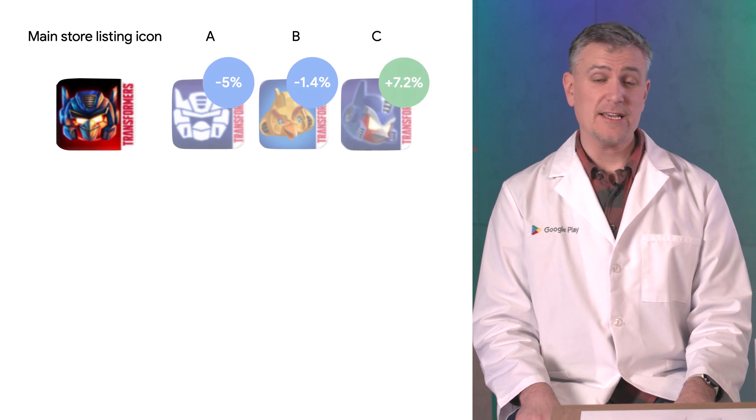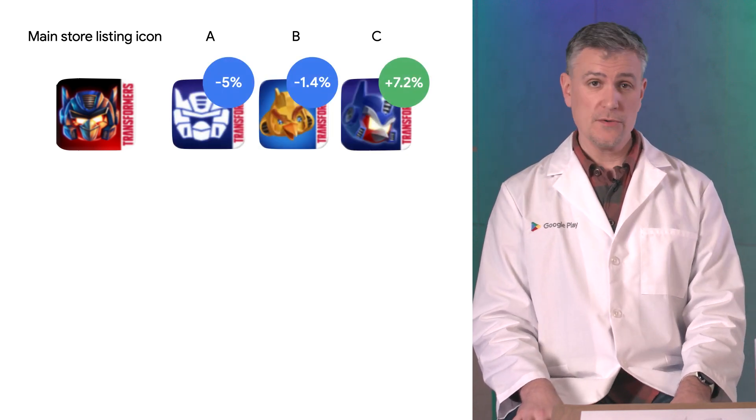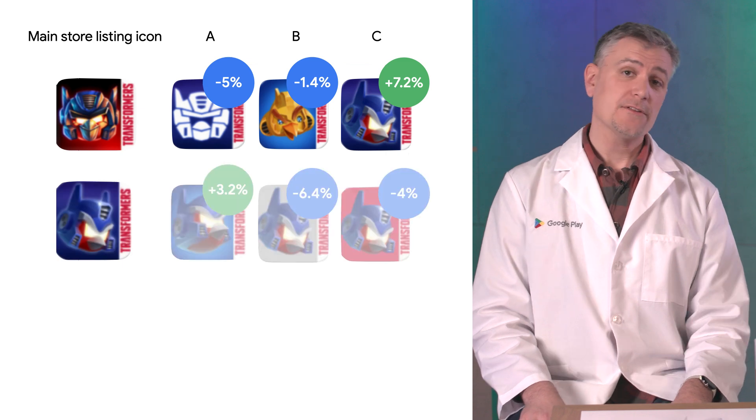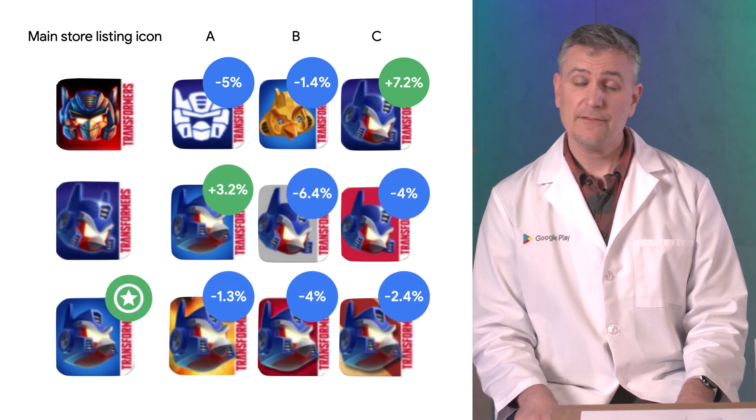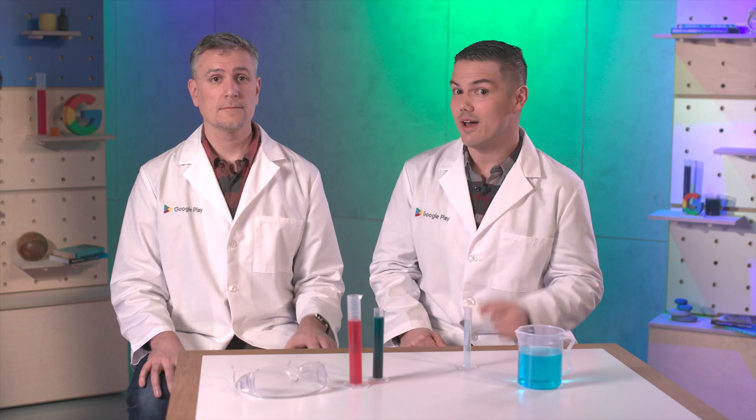And if you think one experiment is enough, think again. Let's look at another example. This one is from Rovio. You can see how even after seeing an improvement from the first experiment of 7.2%, this developer went on to test another set of iterations and found additional lift. You can see how just a little testing and iteration with experiments can go a long way.